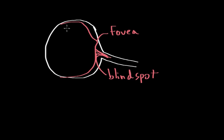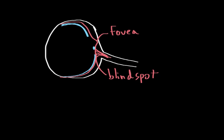Let's look at the distribution of rods and cones in the eye. Rods are mainly found in the periphery of the eyeball. We're going to use blue to represent rods, and they're found mostly in the periphery of the eye. There are no photoreceptors at the blind spot because that's where the optic nerve actually exits the eye.